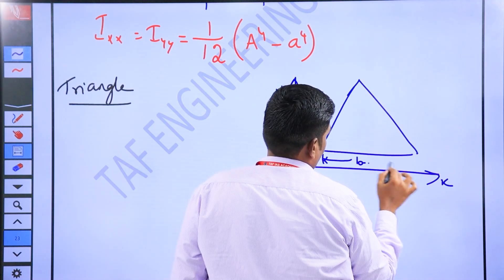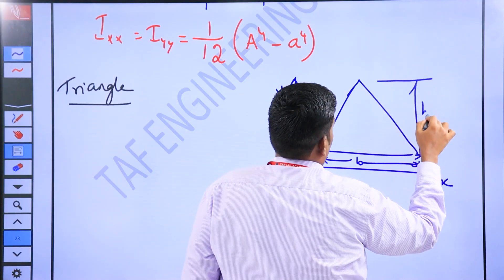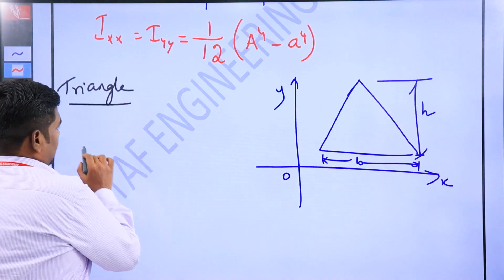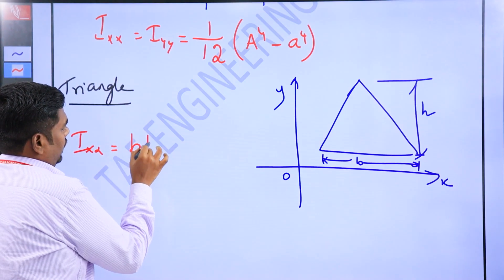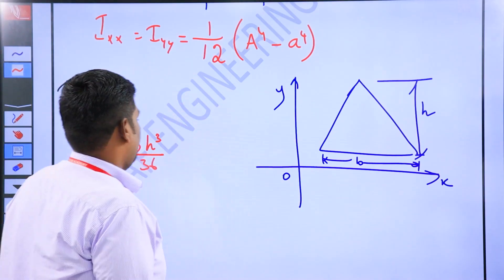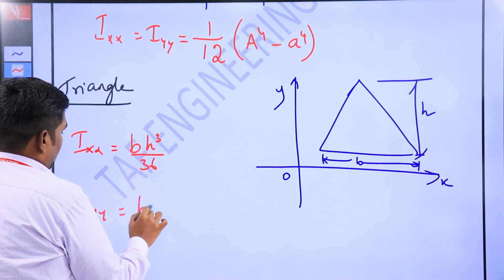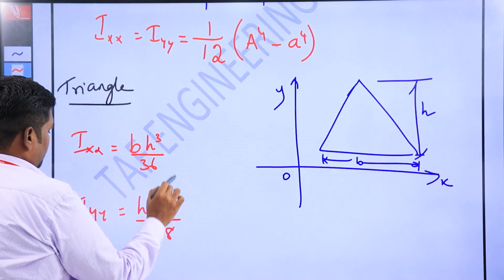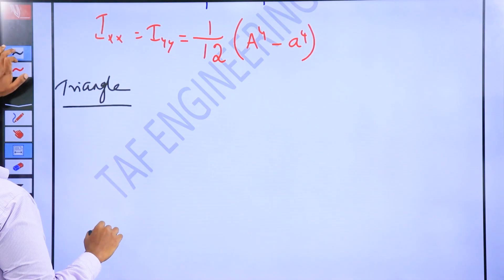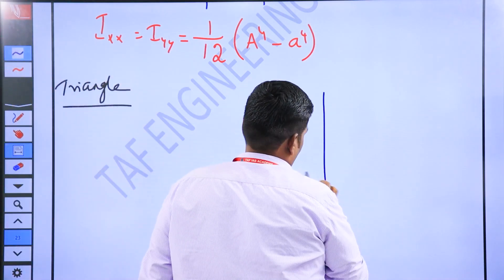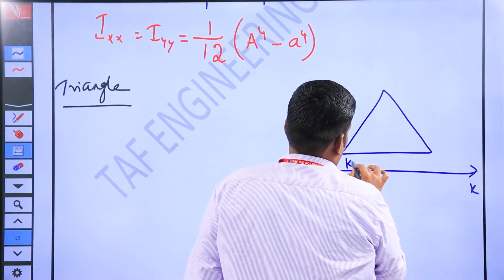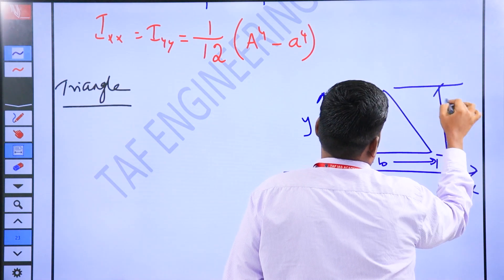Okay, here I have to figure this out. Ixx, Ixx — formula: bh³ divided by 36. And Iyy: hb³ divided by 48. So triangle — x-axis, y-axis, origin. So triangle: B is the base, H is the height.